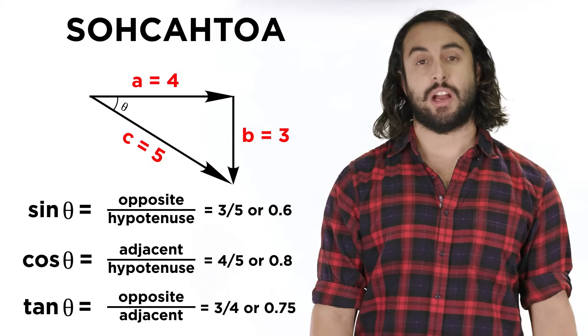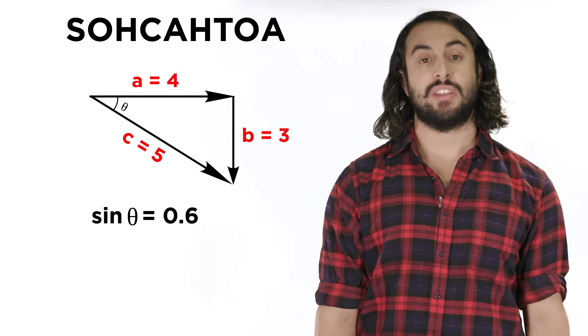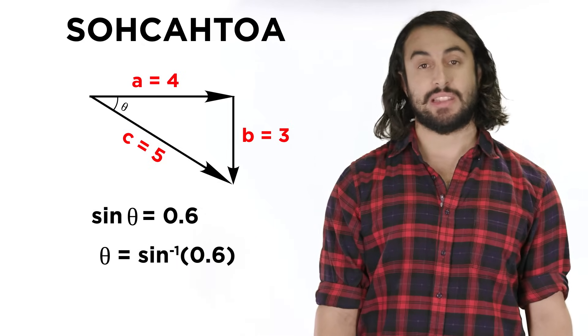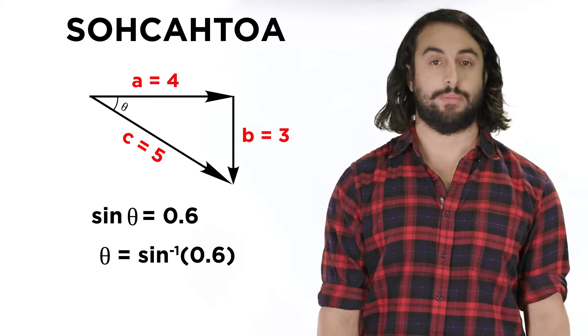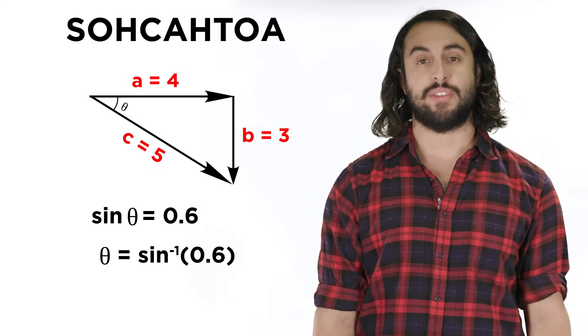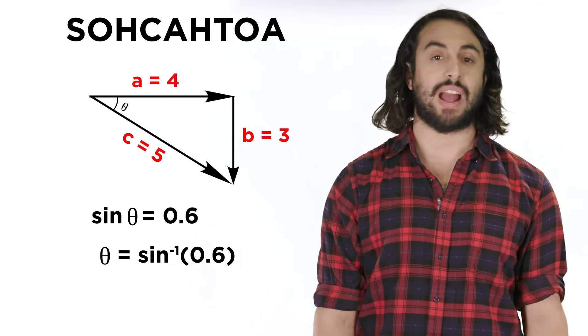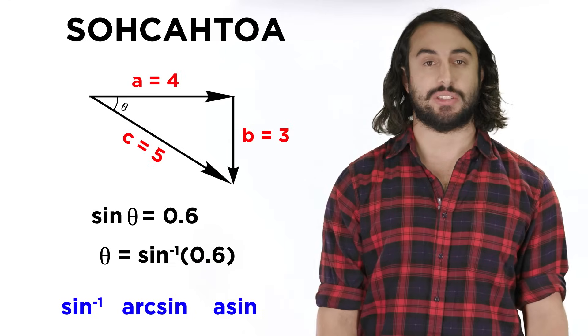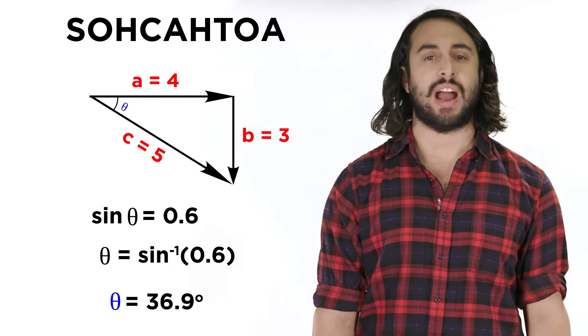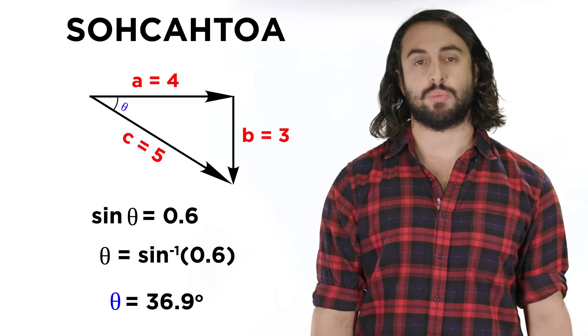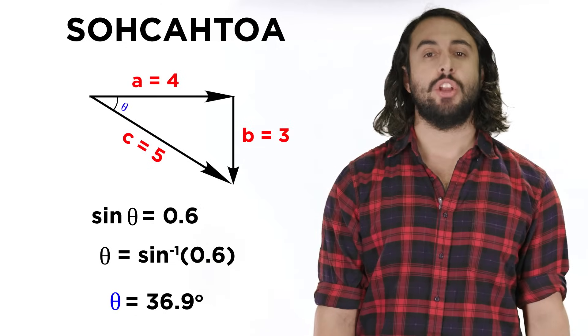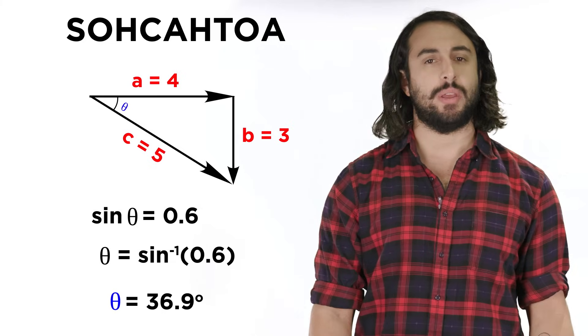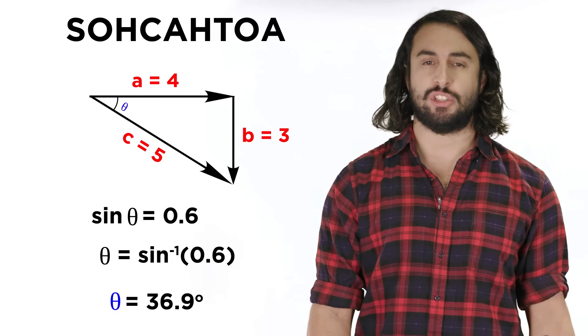To solve for theta, we can use any of these equations. Using this one, we can take the inverse sine of both sides. That makes theta equal to the inverse sine of three-fifths. Just put three over five, or zero point six, into your calculator and press the inverse sine button, which may look like any of these expressions, and we get about thirty-six point nine degrees. Trigonometric functions like these relate the angles of a right triangle to the lengths of the sides, and we will use them a lot in physics, but it usually won't be more complicated than this, so don't worry too much about it.